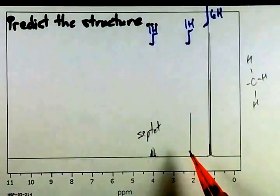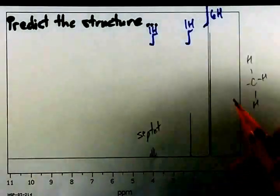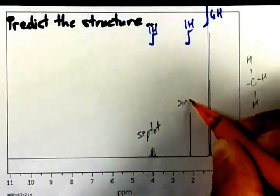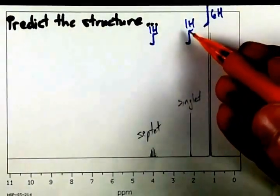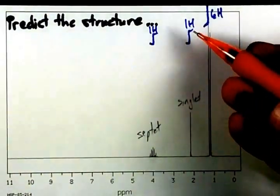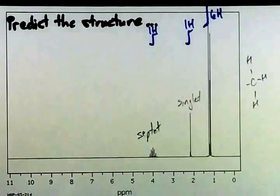Here we have a singlet. There's only one peak here, and so this hydrogen is probably on its own somewhere in the molecule, or buffered by oxygen somehow, or some other electronegative atom.